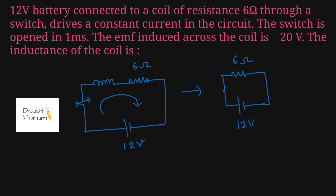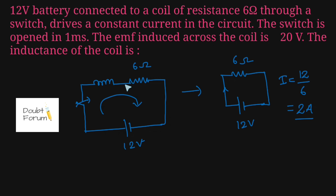The current flowing in this circuit is given by I = V/R. The value of V is 12 volts and R is 6 ohm, so the current comes out to be 2 ampere. A constant current of 2 ampere is flowing through this circuit.